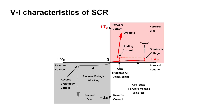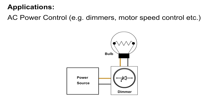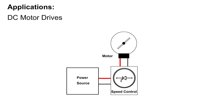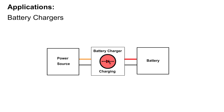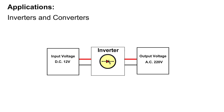VI Characteristics of SCR. Applications include: AC power control — examples such as dimmers and motor speed control; DC motor drives; battery chargers; voltage regulators; and inverters and converters.